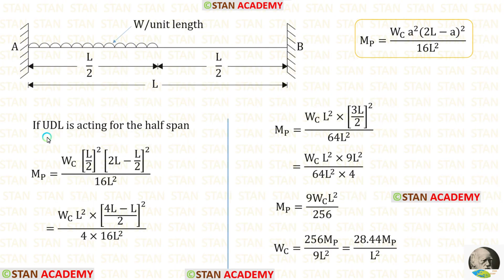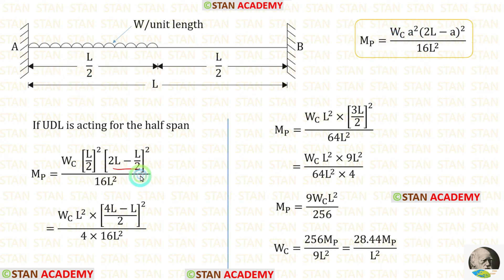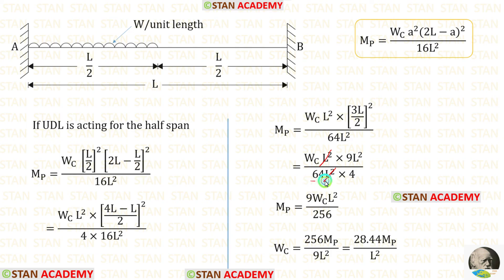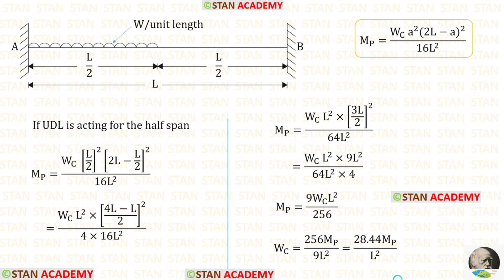Now let us see the second case where UDL is acting for the half span. In this formula, instead of A, we apply L upon 2. We can take LCM: 2L into 2 gives 4L. We can square this term and take it outside. 4 into 16 gives 64. 3L squared is 9L squared and 2 squared is 4. We can eliminate L squared. 64 into 4 gives 256. For MB, finally we get 9WL squared upon 256. And for WC, we get 28.44 MB upon L squared. Now we are going to end this session. Thank you for watching this video.